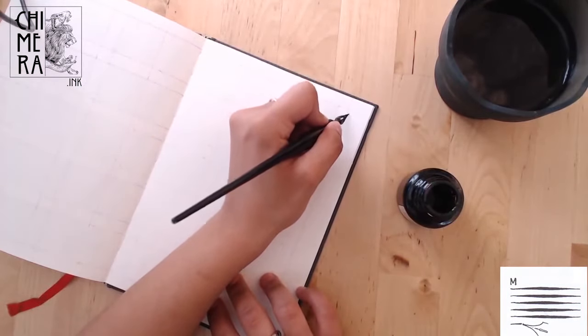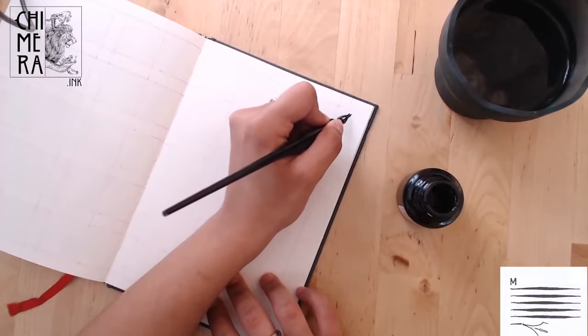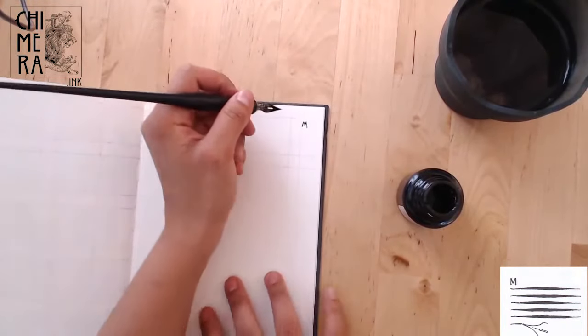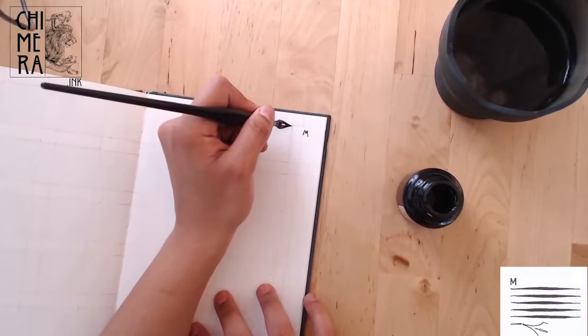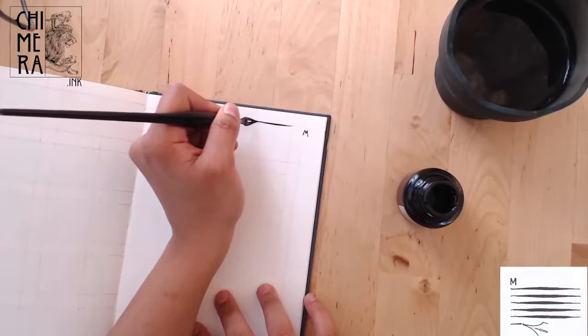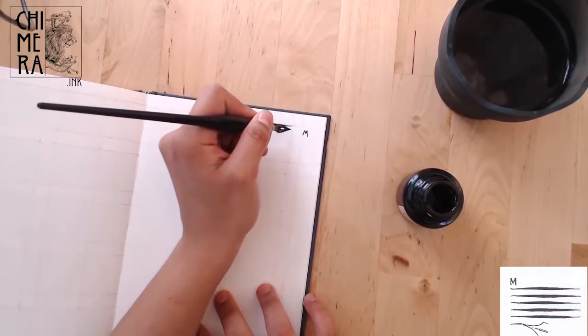So if you guys remember from last week, exercise M is a series of straight horizontal lines that start thin, go thick in the middle and ease into a thin line once more. Just as a reminder, if you haven't seen my previous videos,